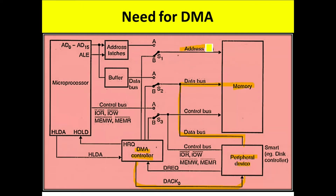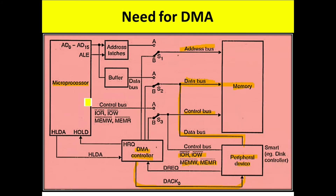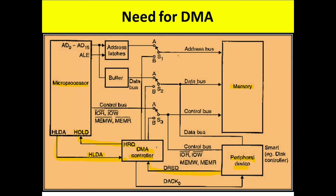The system bus consists of the address bus, data bus, and control bus. This system bus is now under the control of DMA. The DMA controller controls various operations like IO read, IO write, memory read, and memory write. While the system bus is under DMA control, the microprocessor performs other activities that do not require the system bus. After the data transfer between the peripheral and memory is complete, the DMA controller releases the system bus, and it returns to the control of the microprocessor.